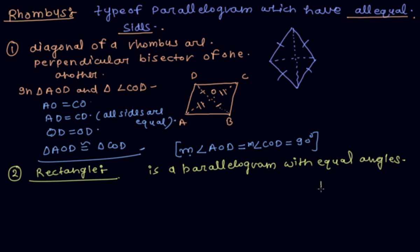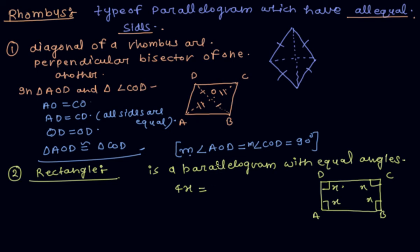A rectangle is a parallelogram with equal angles. If each angle is equal and we assume each angle is X, then according to the property that the sum of all interior angles of a quadrilateral is 360 degrees, we get 4X = 360, so X = 90 degrees. So a rectangle is a parallelogram in which every angle is a right angle.